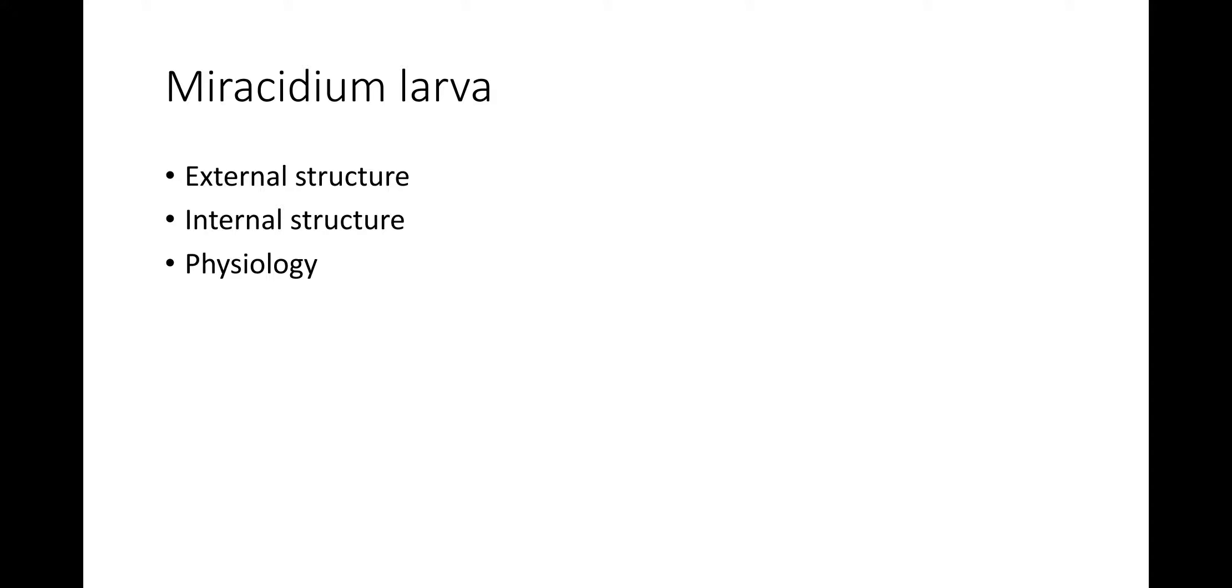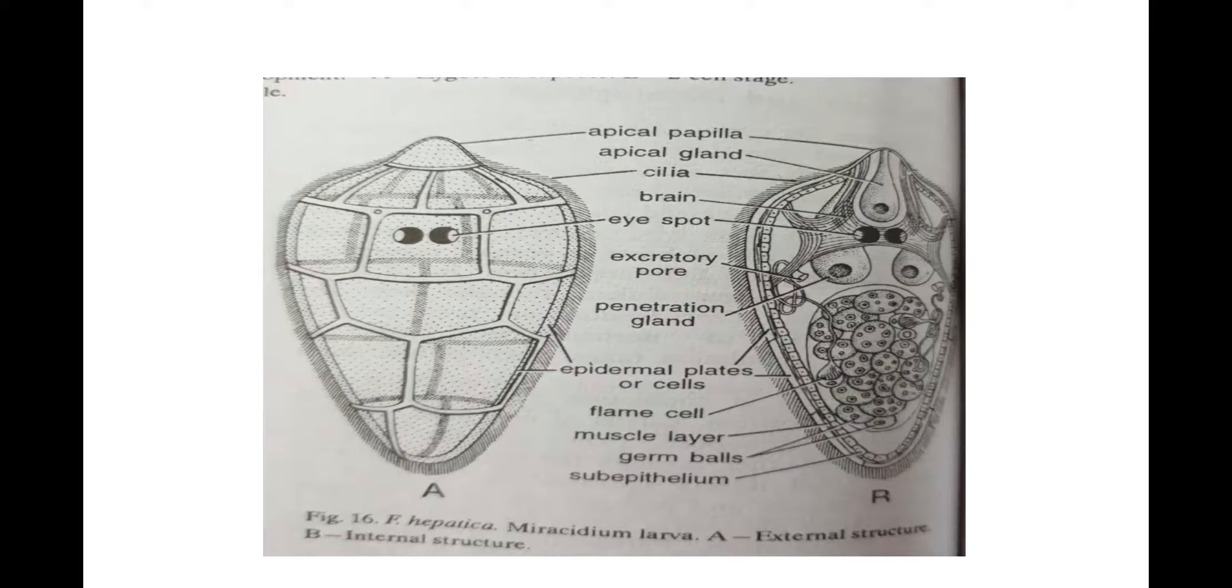The first larval stage involved in the life cycle is Miracidium larva. When suitable conditions become available, the encapsulated embryo in 4 to 15 days differentiates into a Miracidium larva. It hatches out and swims in water. Hatching is initiated by a proteolytic hatching enzyme. It dissolves the cementing material by which operculum is attached, thus releasing the operculum.